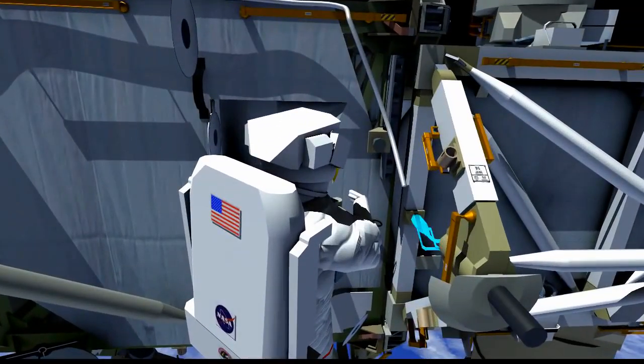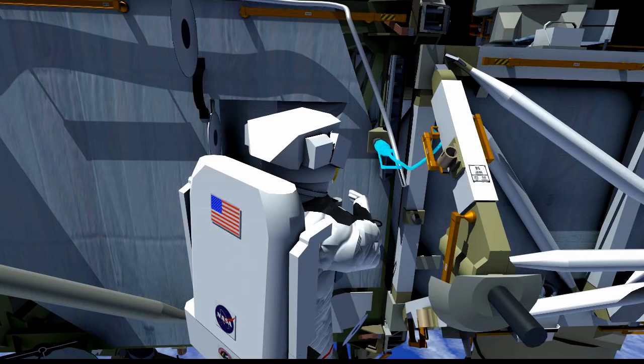As long as everything is successful there, we'll have Chell mate the P5-P6 jumper over to P6, and this will start the fill of the early external thermal control system.